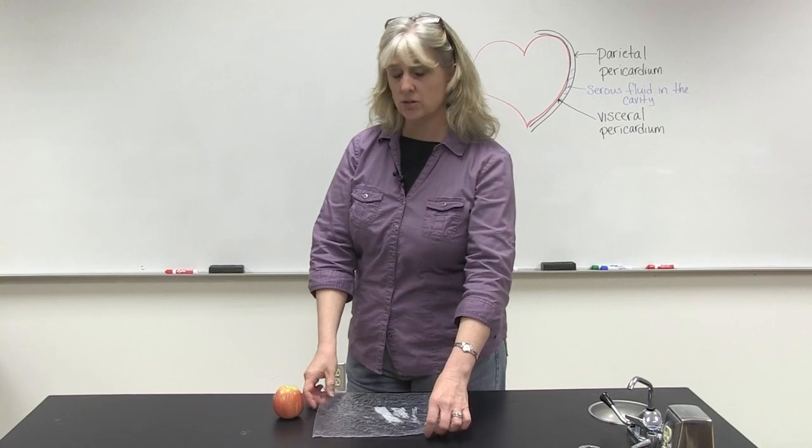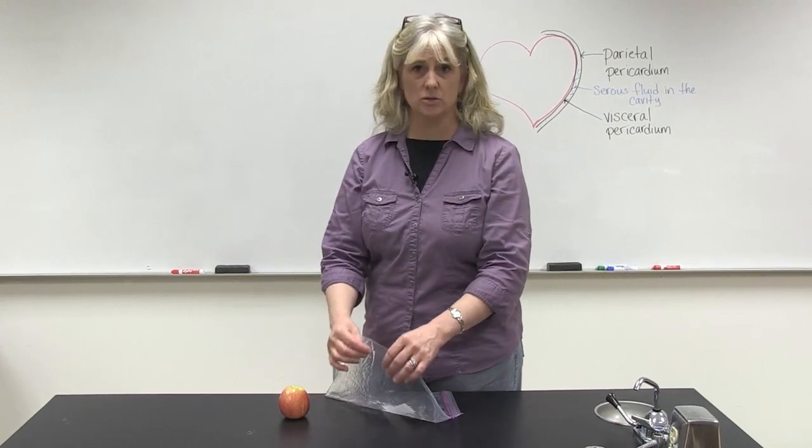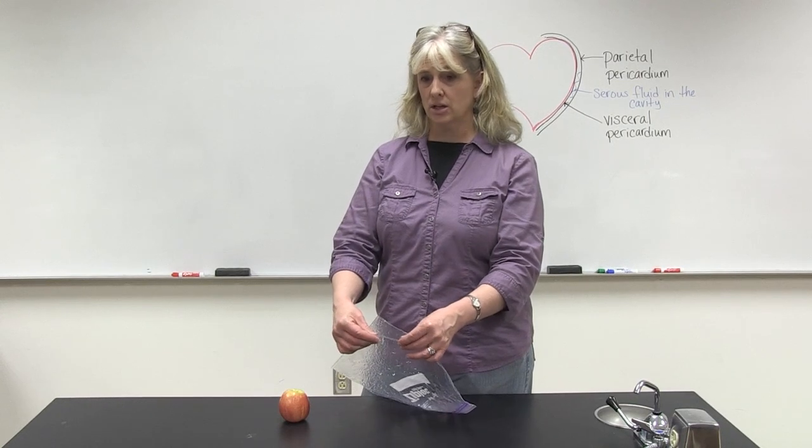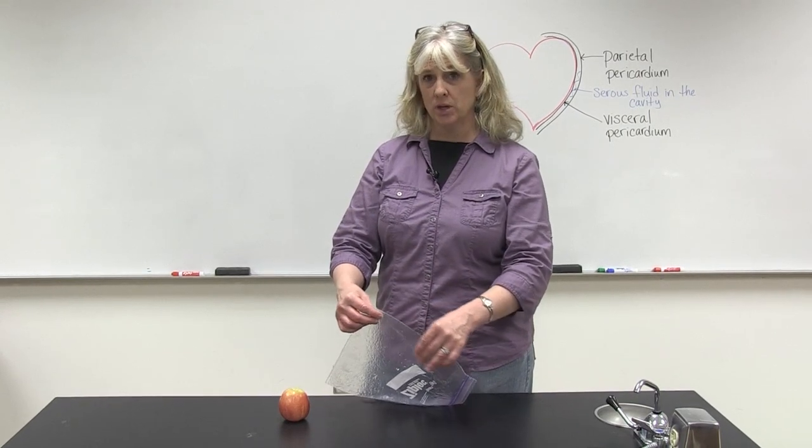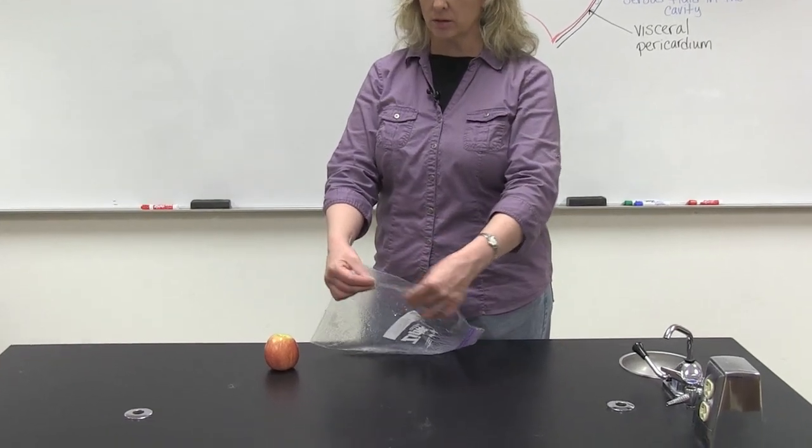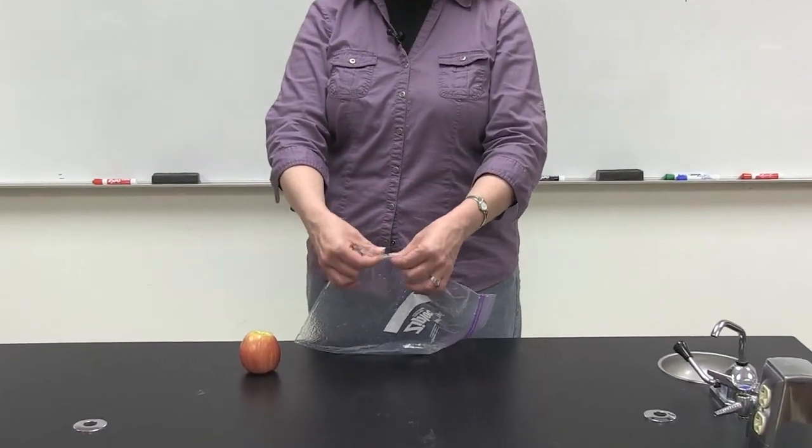We have two serous membranes around each of our organs, just like this bag has two sides to it. We have an outside and an inside part—an outer part and an inner part.